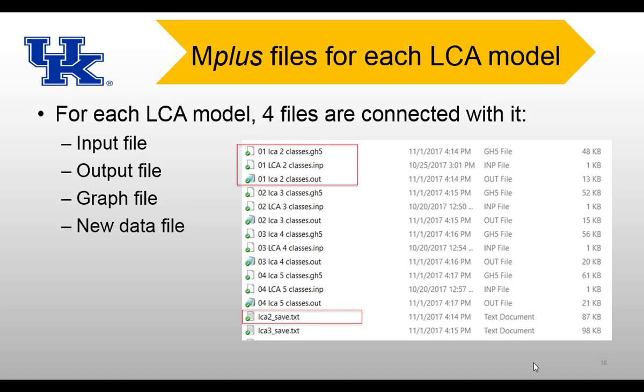For new users of M+, each LCA model produces four associated files: the input file (syntax), an output file, a graph file ending in .gh5, and a new data file such as lc2-save.txt. The new data file includes the original five-variable dataset along with additional information obtained from the LCA analysis.